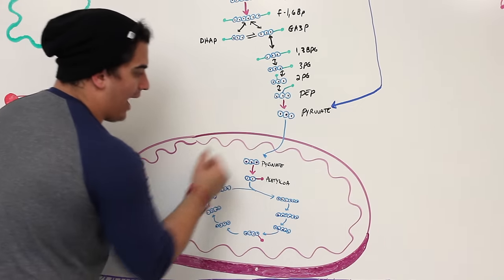In summary: gluconeogenesis is the formation of glucose from non-carbohydrate sources, occurring in the liver and kidneys (primarily the proximal convoluted tubule), triggered by hypoglycemia (below 70-80 mg/dL) and the brain's need for glucose as its primary fuel. The three main gluconeogenic substrates are lactic acid, glycerol, amino acids, with odd-chain fatty acids as a minor contributor.